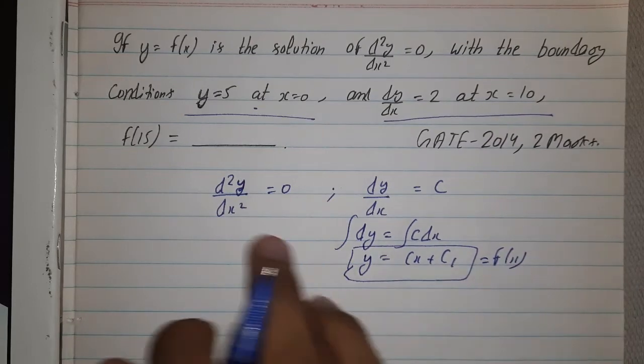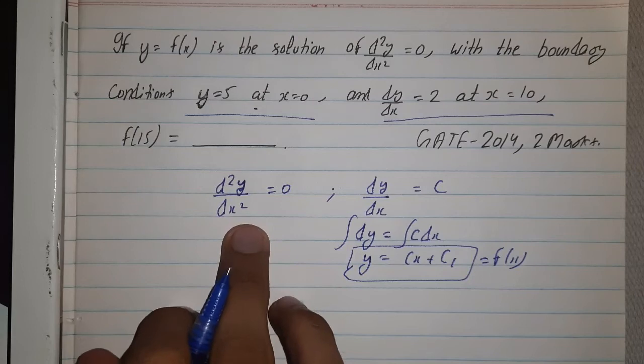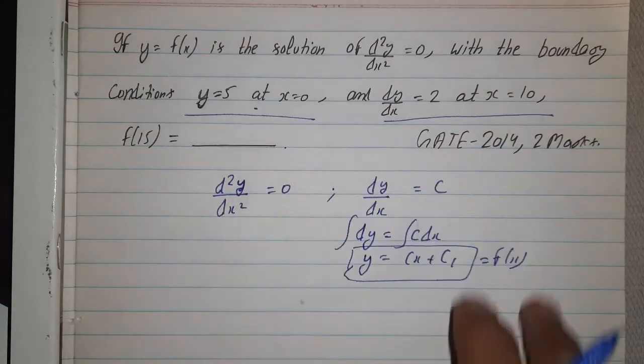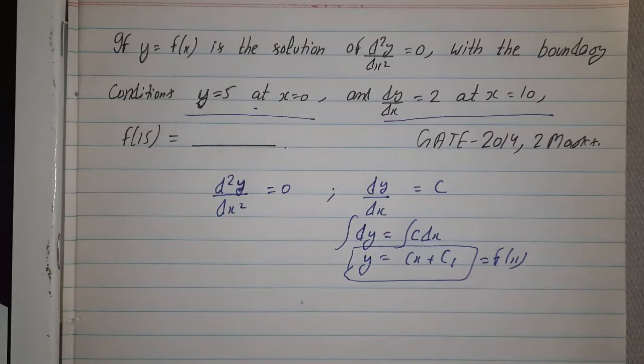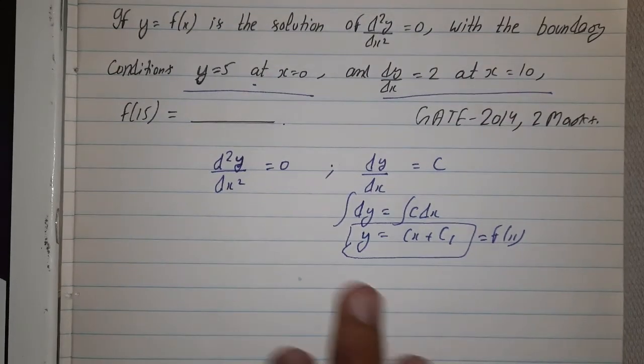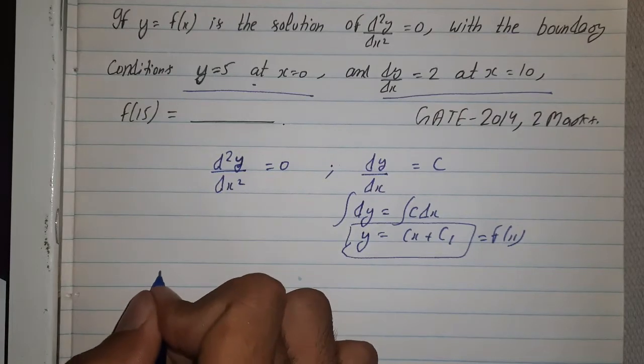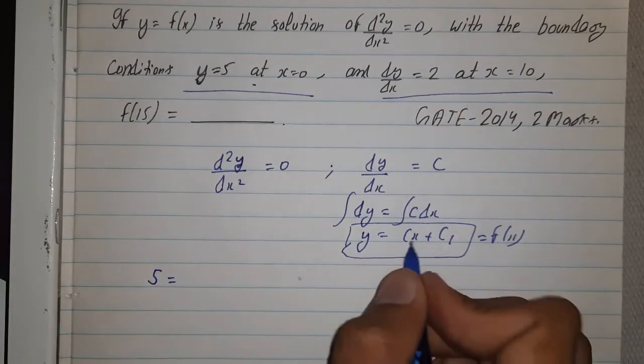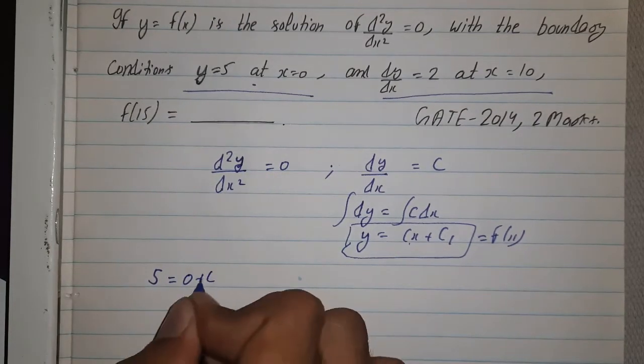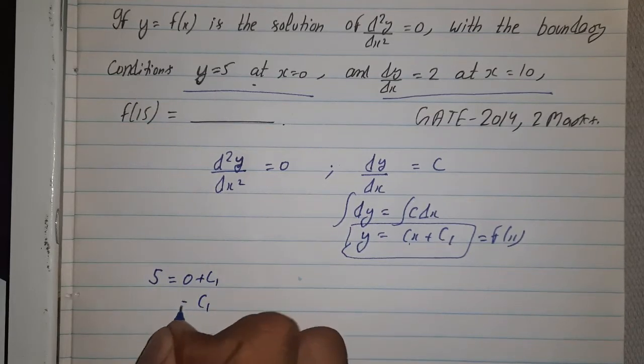For the differential equation d²y/dx², we are given with two conditions and two coefficients. So we are going to find each coefficient. First coefficient is y = 5 at x = 0. So y = 5 and x = 0, so 0 plus c1, we are left with c1 = 5.